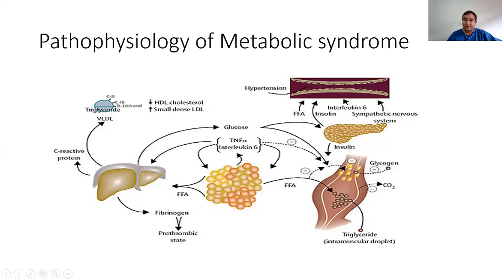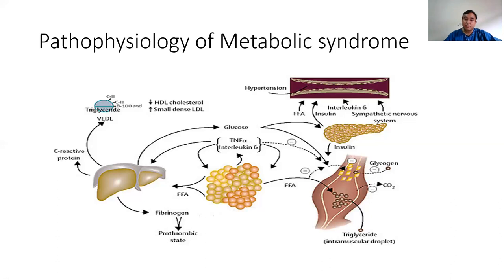Another effect of excess free fatty acids reaching the liver is that the liver starts producing more glucose, leading to hyperglycemia. This increased glucose stimulates the pancreas to secrete more insulin. However, the insulin cannot act properly because free fatty acids at the level of muscles inhibit the action of insulin — this is insulin resistance, which is why the condition is also called insulin resistance syndrome. So the net effect is more insulin in the body but it is not acting properly, while glucose levels remain high.